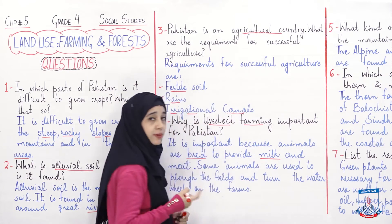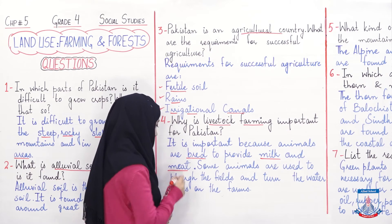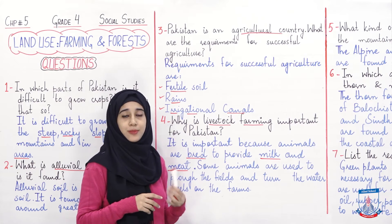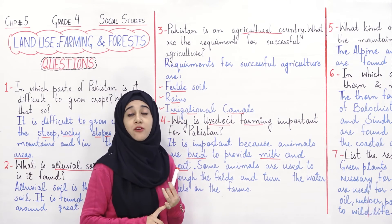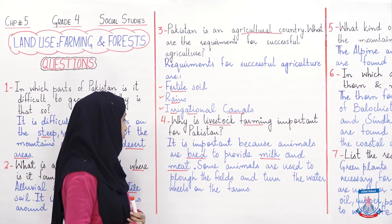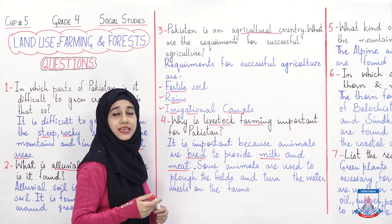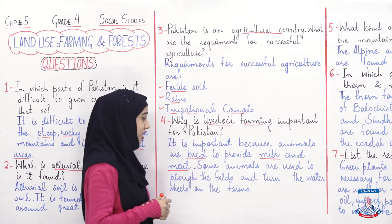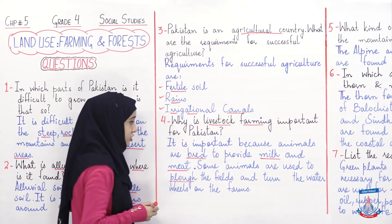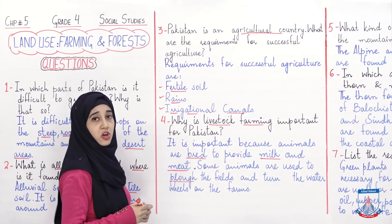جن جانوروں سے ہمیں دودھ ملتا ہے and meat — گوشت بھی ملتا ہے۔ تو livestock farming کا فائدہ یہ ہے کہ گوشت ملتا ہے اور دودھ یعنی milk ملتا ہے۔ Some animals are used to plow the fields — کچھ جانور کھیتی باڑی کے لیے استعمال کیے جاتے ہیں، ہل چلانے کے لیے۔ Plow کا مطلب ہوتا ہے ہل چلانا — and turn the water wheels on the farms.